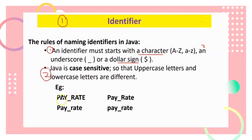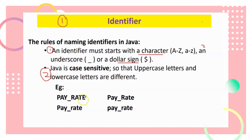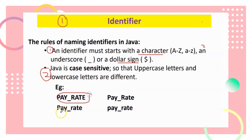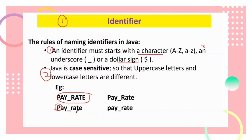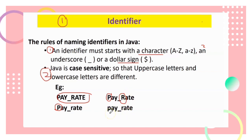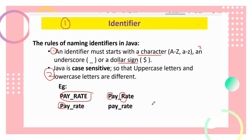For example: 'pay_rate' written all in uppercase letters is one identifier; 'payRate' with only P uppercase is another; 'payRate' with P and R uppercase is another; and 'payrate' all lowercase is yet another. Although all have the same meaning, they are considered different identifiers in Java. Please take note.